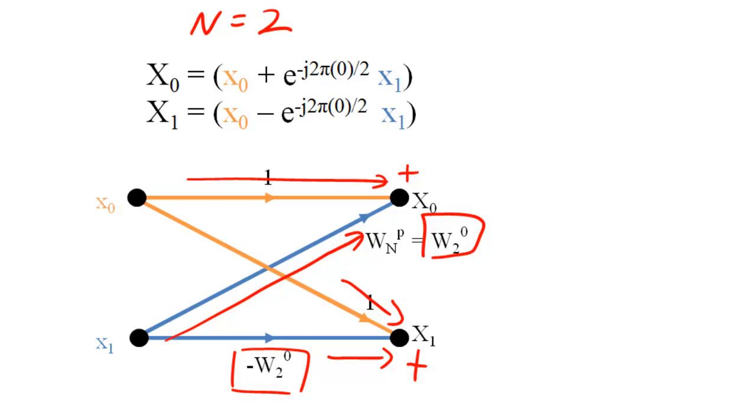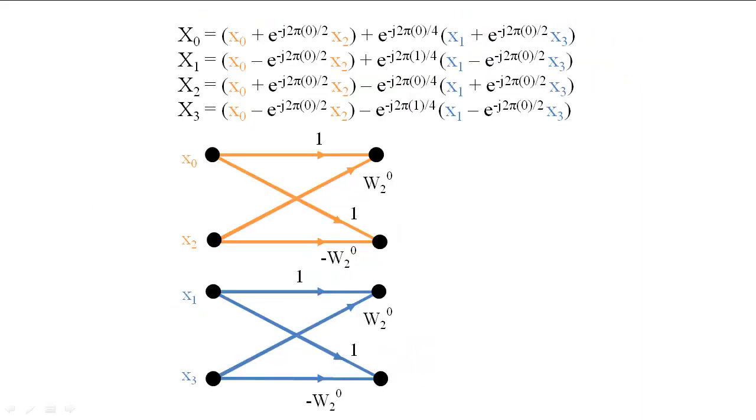We see that a two-sample DFT requires only two multiply accumulates. Now, let's look at a four-sample DFT. As you may notice, the even-samples and odd-samples each share the same form as the two-sample DFT.